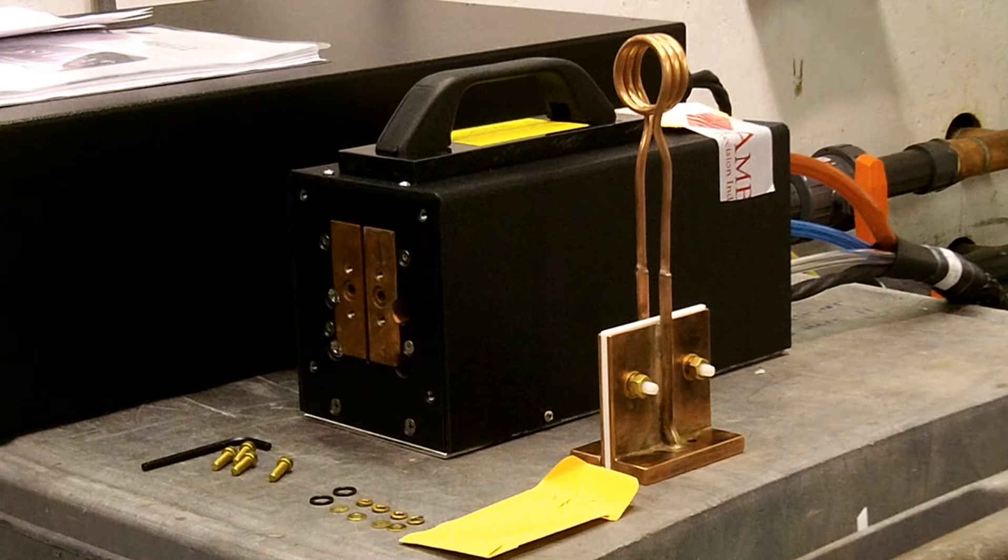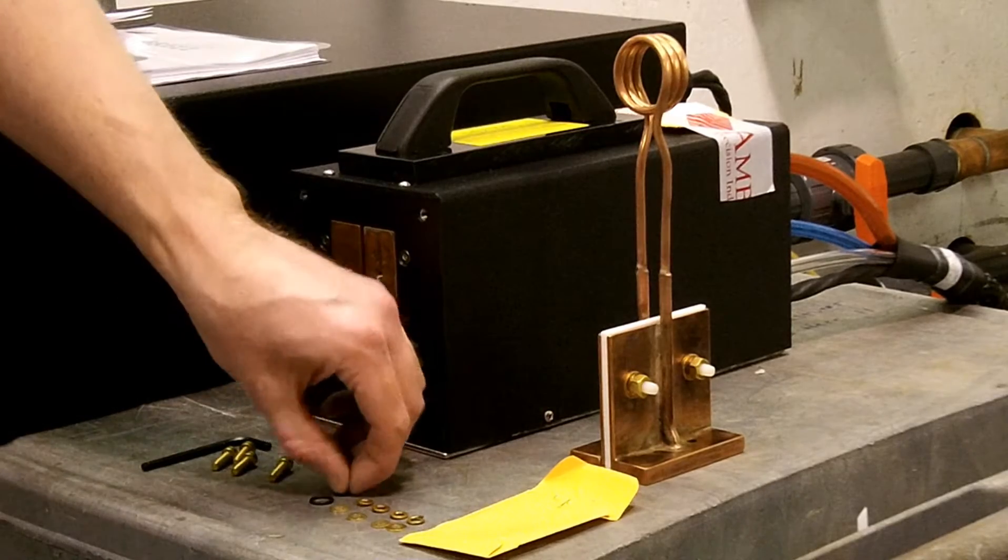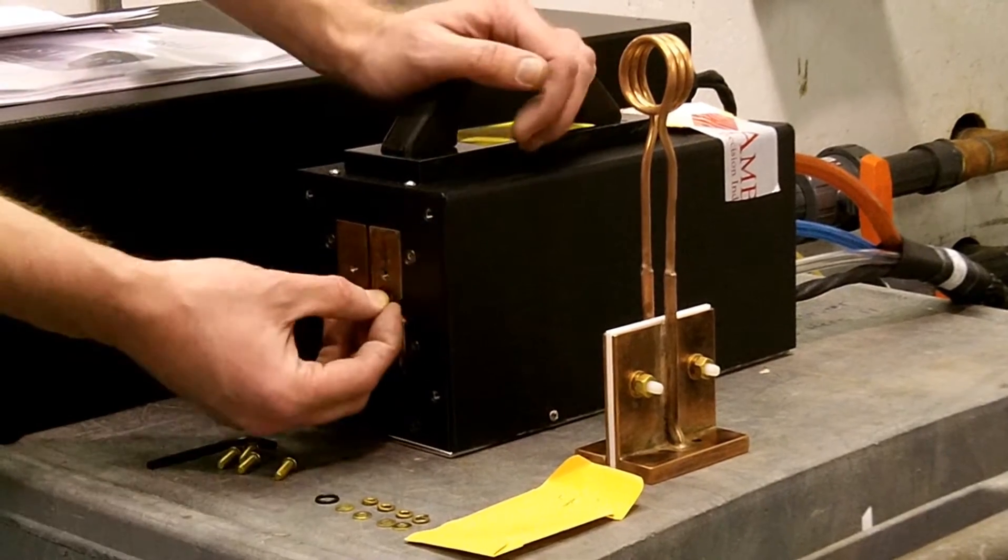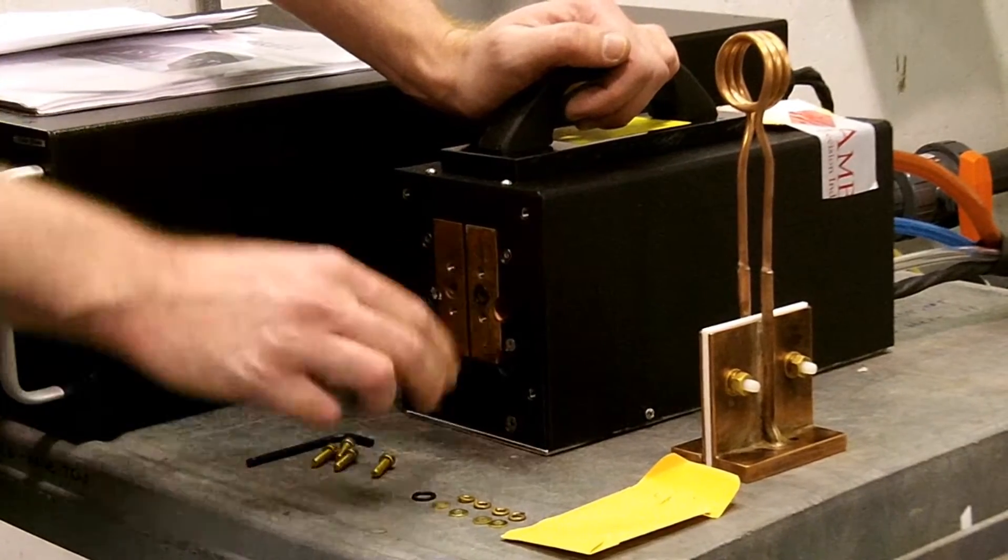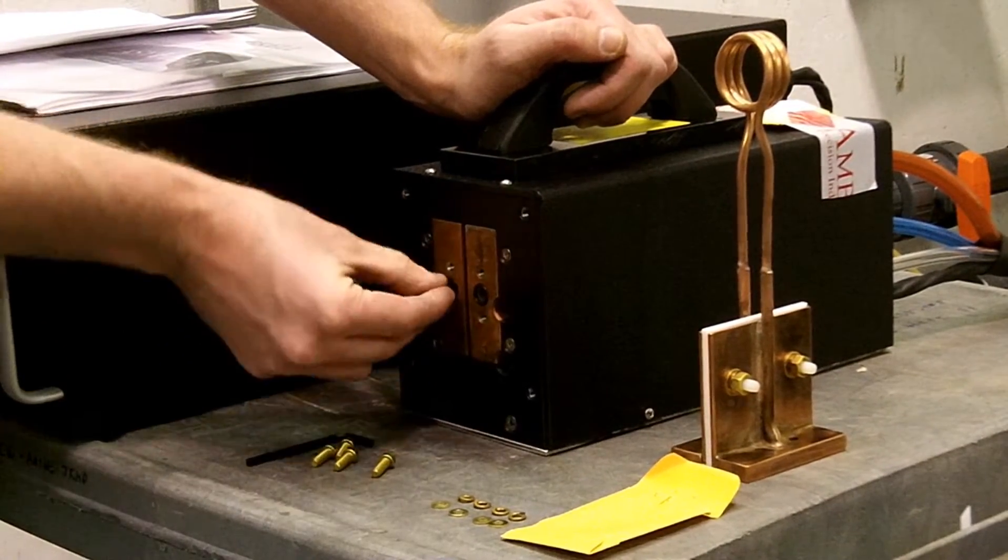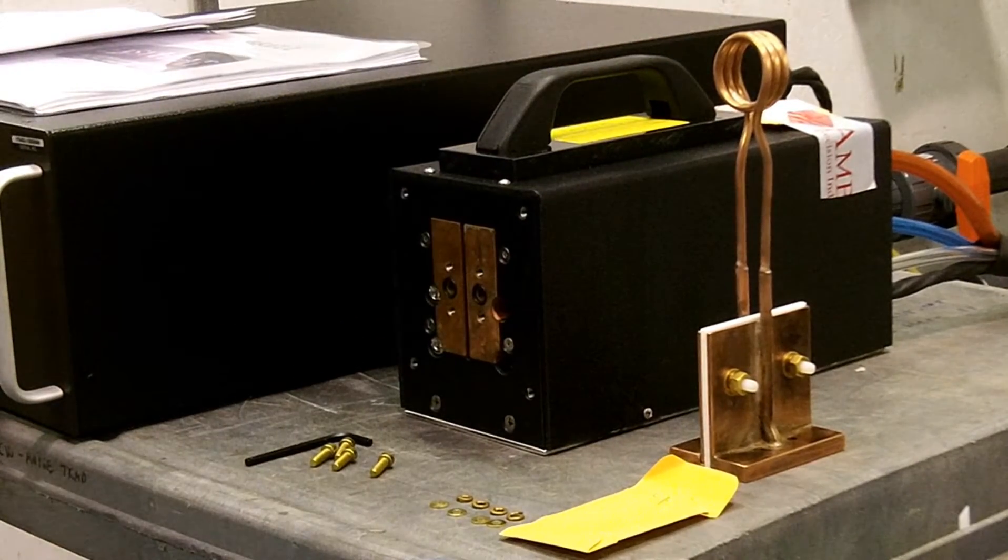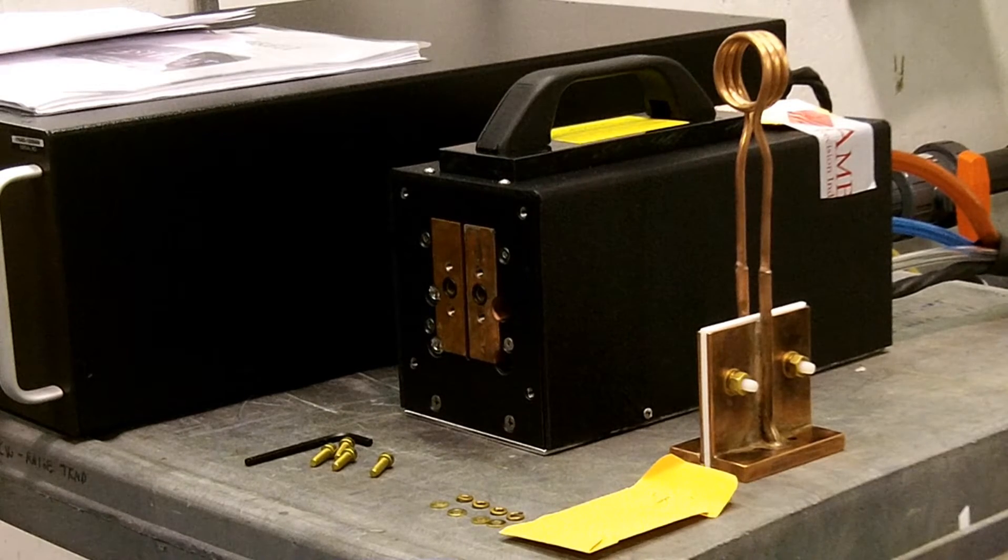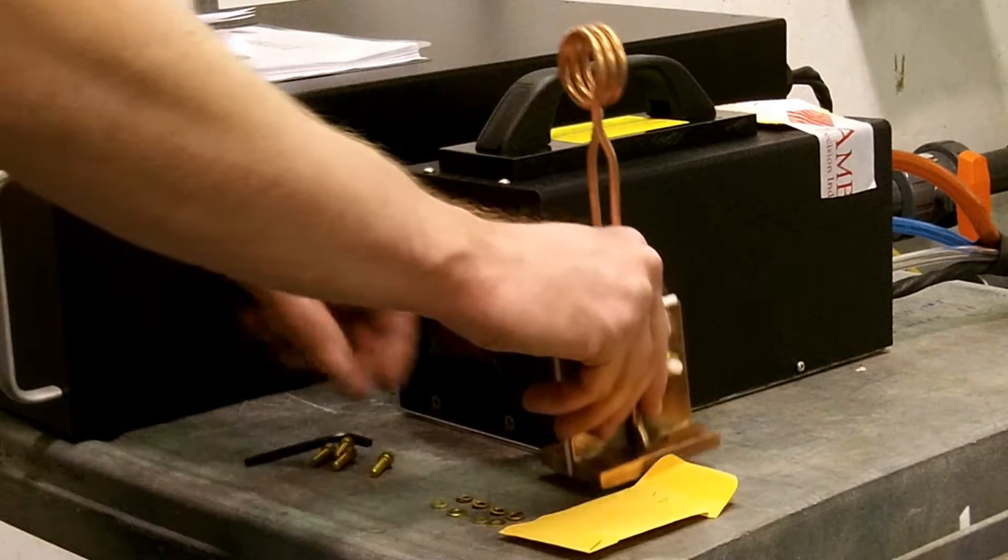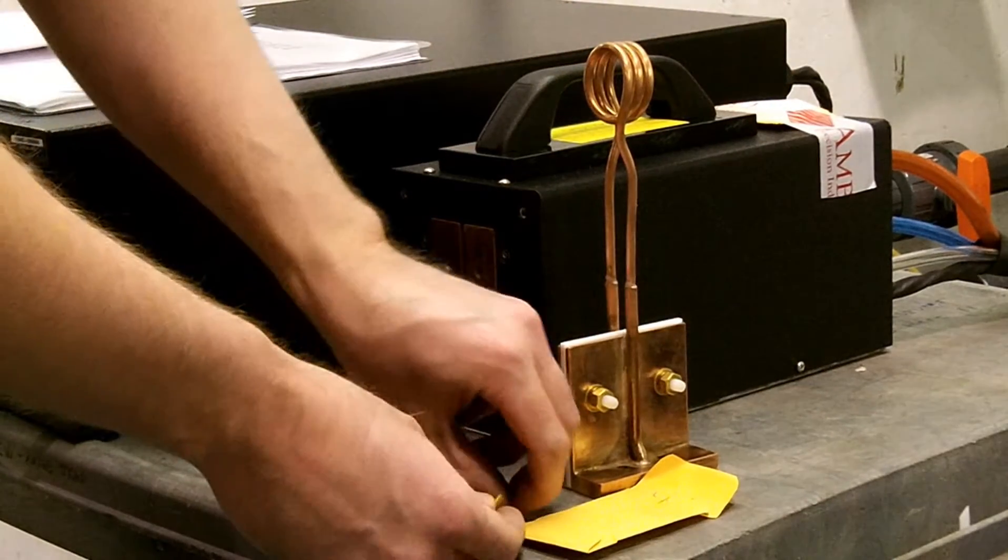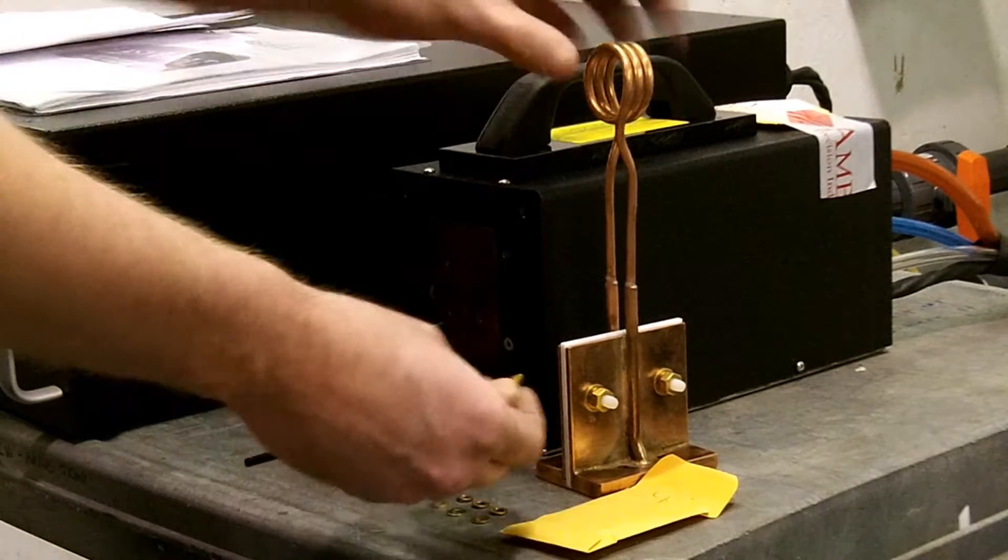Now, we need to connect the test coil to the Easy Heat Li. First, insert an O-ring into each recessed slot in the face of the heat station. Now, secure the coil with the four screws provided and tighten.